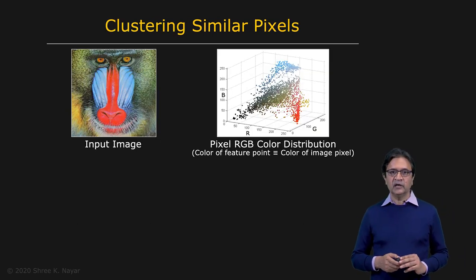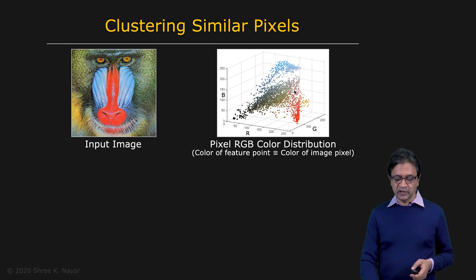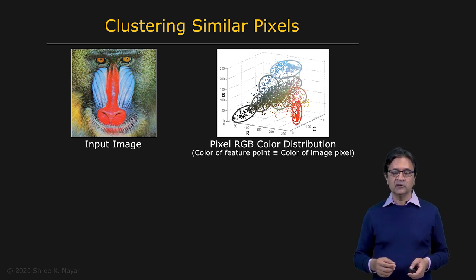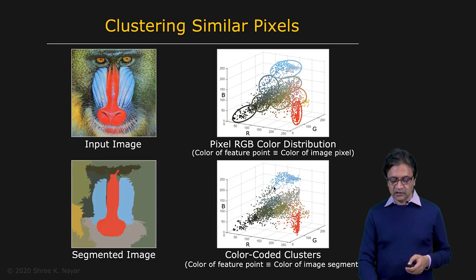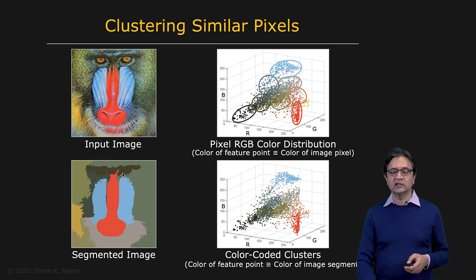So now we are able to view segmentation as essentially a clustering problem. You have this image, you've mapped it into some feature space, and in that feature space we use our similarity metric to cluster points together. If you're able to develop such an algorithm, you're going to get clusters that might look something like this — each one of these is a cluster. In this image, you're seeing all the points within a cluster colored with the same color, which is the average color of the cluster, and that color is then mapped back to the image. These can be viewed as your segments — this is what we would refer to as a segmented image, and this is the kind of result we are looking for.